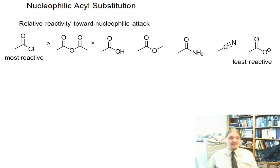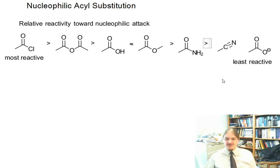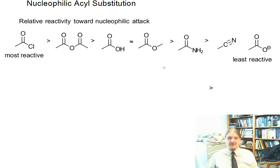The acid chloride is more reactive than the anhydride, which is more reactive than the carboxylic acid. The carboxylic acid is generally considered to be about equivalent in reactivity to the ester — the ester is maybe slightly less reactive in some cases, maybe more reactive depending on what the R group is. Esters are more reactive than amides, and amides are more reactive than nitriles, though some folks might put amides and nitriles at similar reactivity.